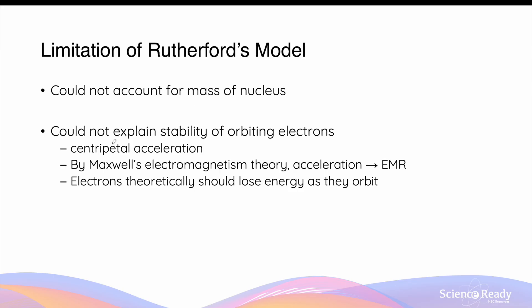The second limitation of Rutherford's model was that he could not explain the stability of these orbiting electrons. In classical physics, when electrons undergo uniform circular motion as they orbit the nucleus, they will experience centripetal acceleration. And by Maxwell's electromagnetism theory, whenever charges undergo acceleration they should theoretically emit electromagnetic radiation — EMR for short. This means as electrons experience centripetal acceleration throughout the orbit, they should be producing EMR and slowly lose energy. As these electrons lose energy, they will eventually spiral into the nucleus as they do not have sufficient speed to maintain their orbit. If electrons had actually spiraled into the nucleus, this would neutralize the positive charge of the protons in the nucleus, resulting in a neutrally charged nucleus — but we know the nucleus must be positively charged because of the observations of the gold foil experiment.